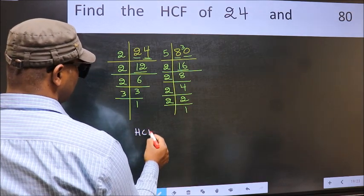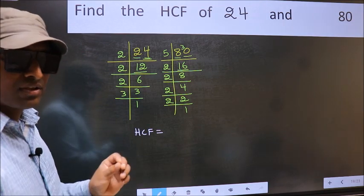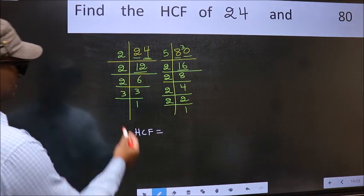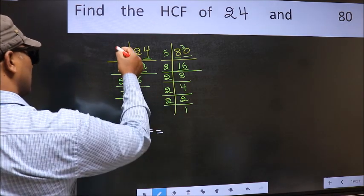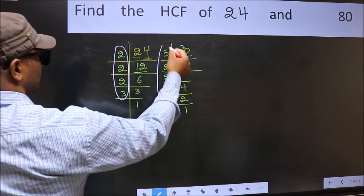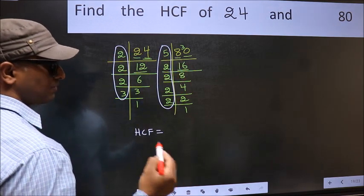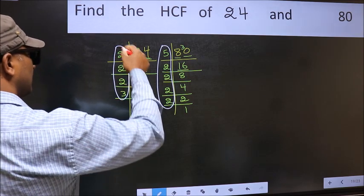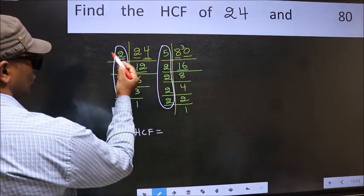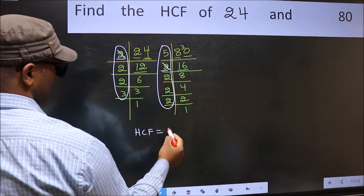Therefore, our HCF is the product of the numbers which should be present in these 2 places. That is here and also here. Here and here. So now let us find the numbers which should be present here and here. Starting with the number 2. Do we have 2 here? Yes.